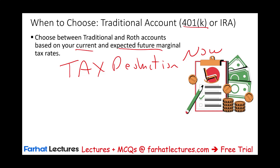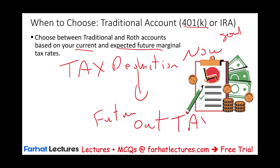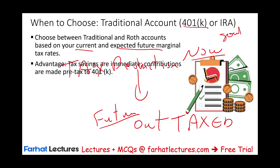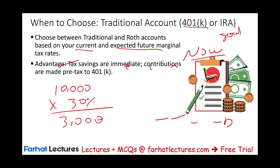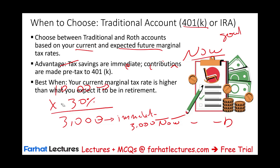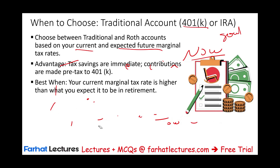The money you put away is shielded from taxation, giving you immediate savings. These are pre-tax plans. For example, if you put away $10,000 and your tax rate is 30%, you've lowered your taxes by $3,000 immediately. That money then grows tax-free until you take it out. The bad news: when you take the money out in the future, you will be taxed. So you use this strategy when your current marginal tax rate is higher and you expect it to be lower later on.